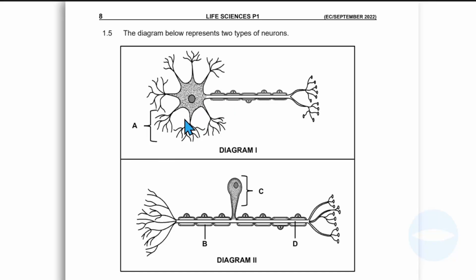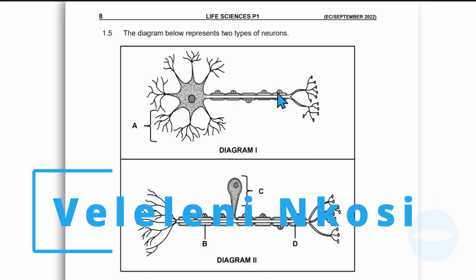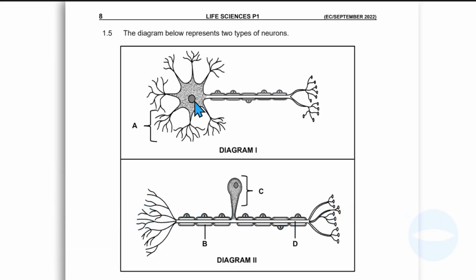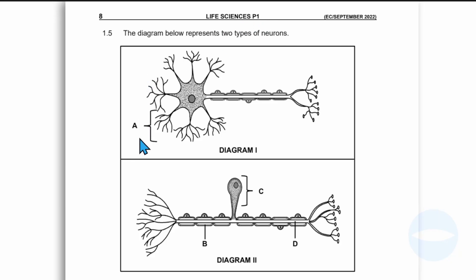Hello everyone. Welcome back again to our channel. My name is Velenin Nkosi. In this video, I'm answering a previous question paper of Life Sciences Grade 12. The paper was written in the province of the Eastern Cape. It was in September 2022, and it's for Life Sciences Paper 1. The question is based on the topic of human responding to the environment.